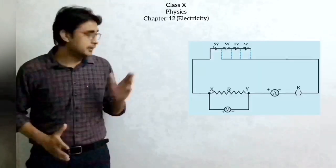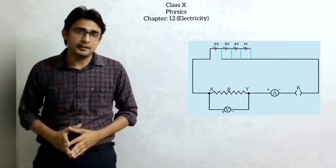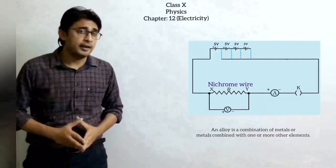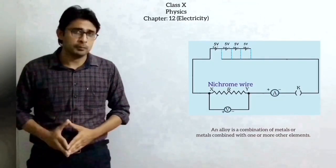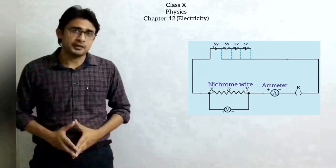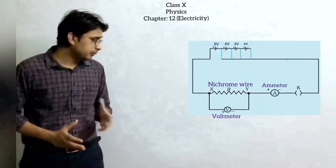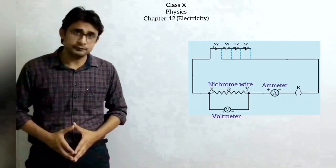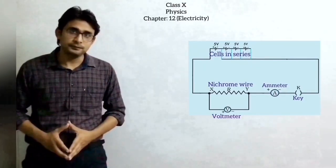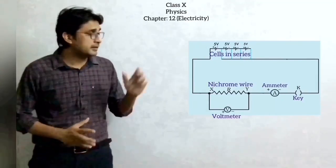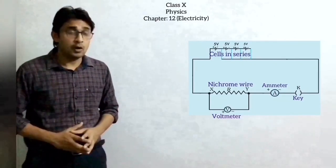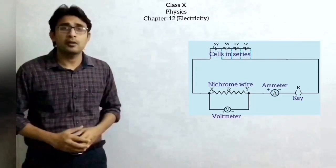In this activity there is a circuit. As you can see, it consists of a nichrome wire XY, which is an alloy made up of nickel, chromium, manganese and iron. It also consists of an ammeter which measures electric current through the circuit, a voltmeter which measures potential difference across the nichrome wire, a key and four cells of five volts each. The dotted lines indicate that we can connect either one cell or a combination of two cells, three cells, or all four cells together.